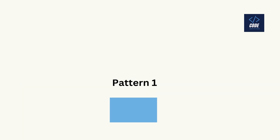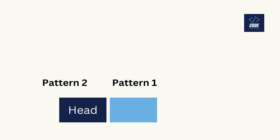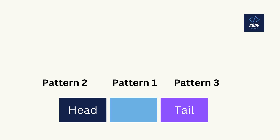When we want to find some data, we write a pattern for it — let's call it pattern 1. But this pattern is a special one where before it there should be one more pattern — let's call that pattern 2. And behind this pattern there should be one more pattern — let's call it pattern 3. So pattern 1 should be in between pattern 2 and pattern 3.